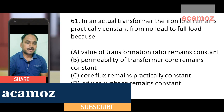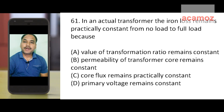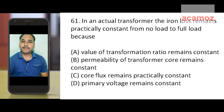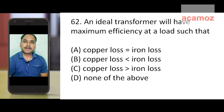The first question is: in an actual transformer, the iron loss remains practically constant from no load to full load because the value of transformer remains constant, permeability of transformer core remains constant, core flux remains practically constant, and primary voltage remains constant. The answer is option C: core flux remains practically constant.